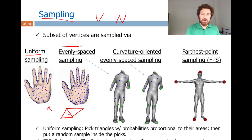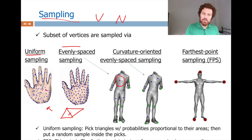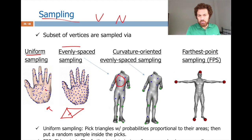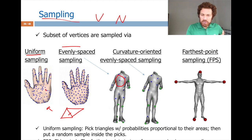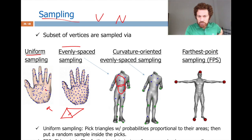A better algorithm is even-space sampling: select a random point, then mark its geodesic neighborhood up to some radius as unavailable (using a partial Dijkstra). In the next iteration, select a random vertex not marked as unavailable. This defines another unavailability region, and the process repeats. You can also make it curvature-based: sort vertices by curvature and always select the highest-curvature available vertex, ensuring important geometric features like knee caps are captured.